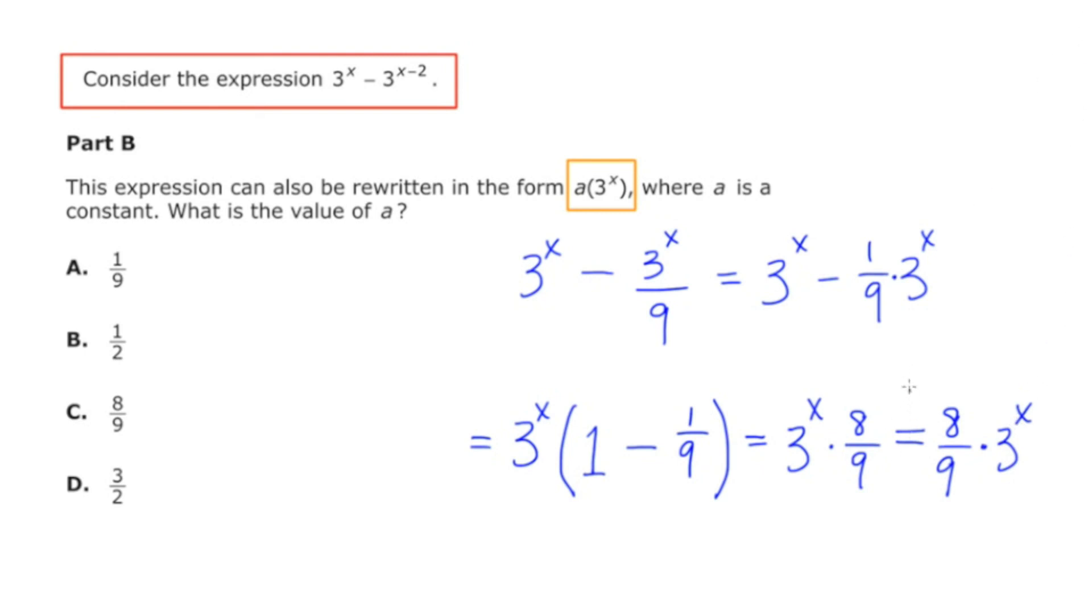And if I look at that response, and I look at the template that I'm trying to fit it to, there seems to be a match here. And it seems like the value of a that we're looking at should be 8 9ths, which is answer choice C.